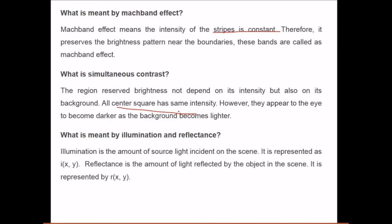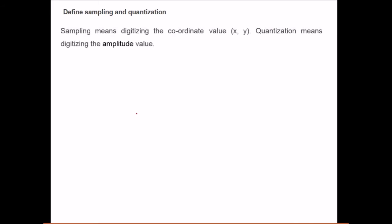What do you mean by illumination and reflectance? Illumination is the amount of source light incident on a scene and is represented by i(x, y), a function of x and y. Reflectance is the amount of light reflected by the object in the scene and is referred to as r(x, y).